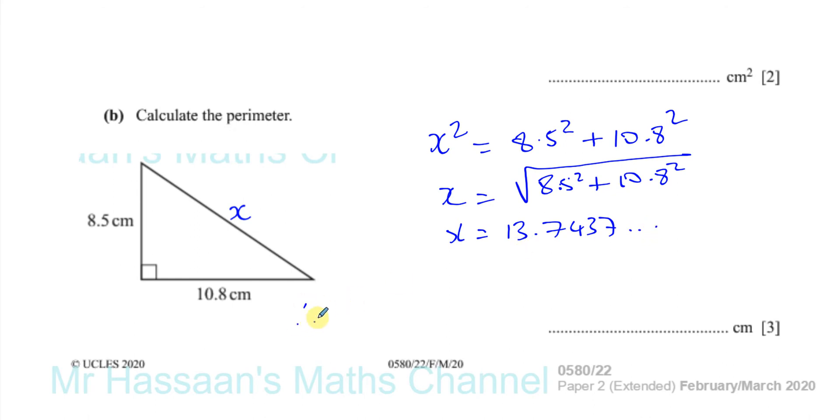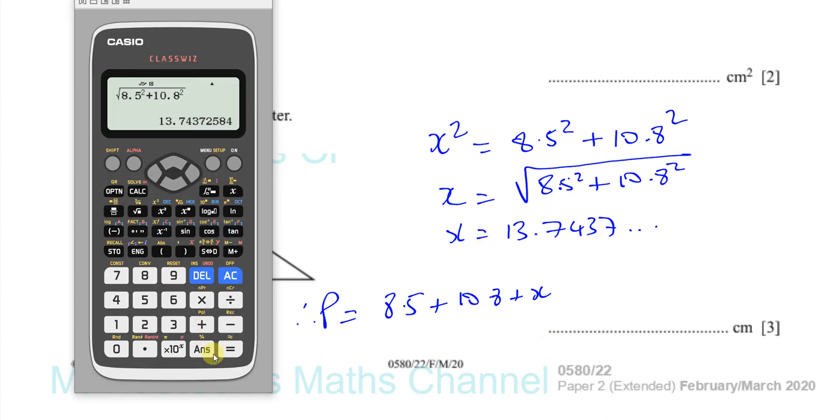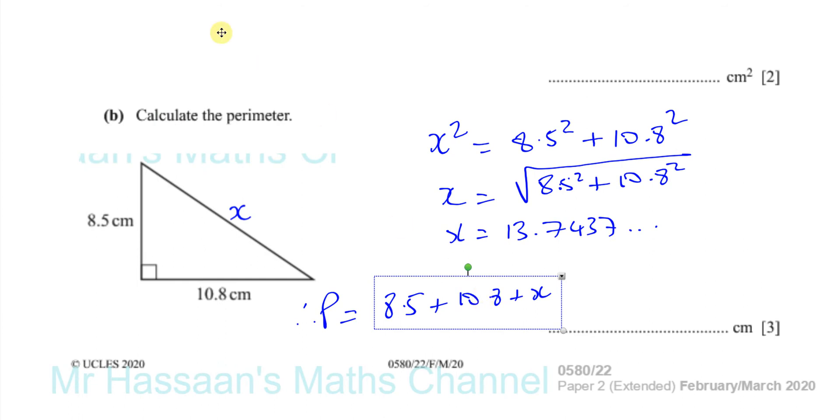So therefore, the perimeter is equal to the sum of these three sides, which is going to be 8.5 plus 10.8 plus X, which is that. And that gives us, so we'll keep this answer and we'll add. Let's put that as a 10.8.